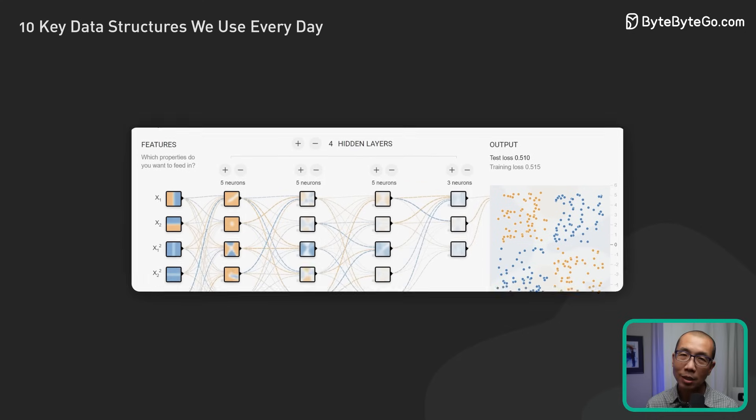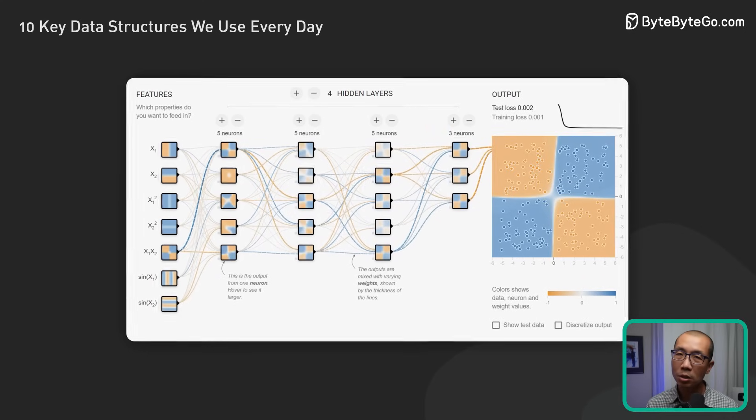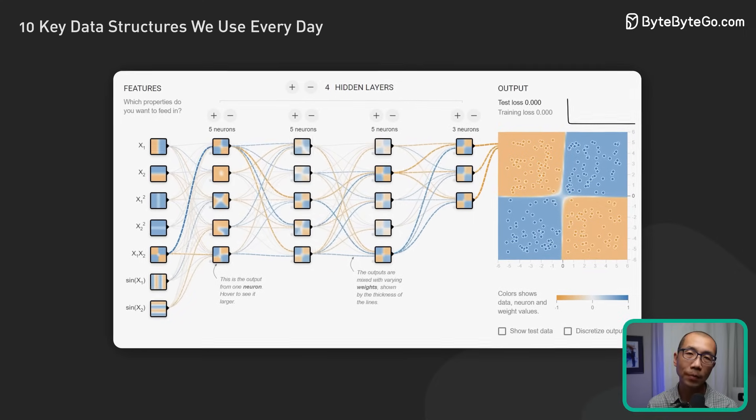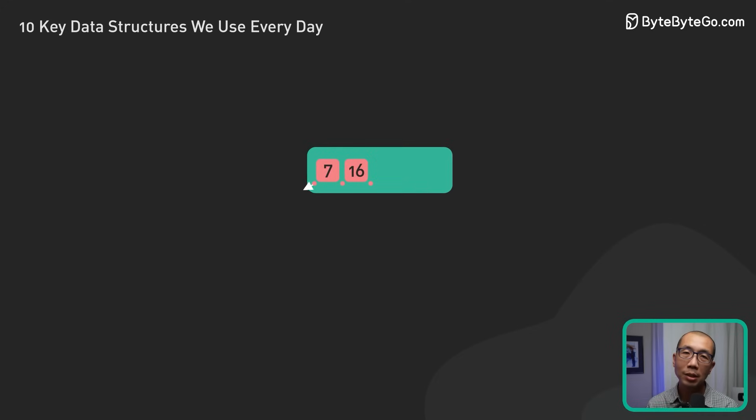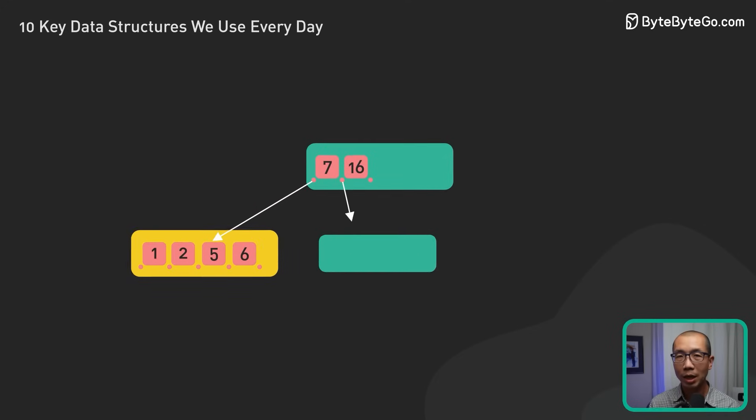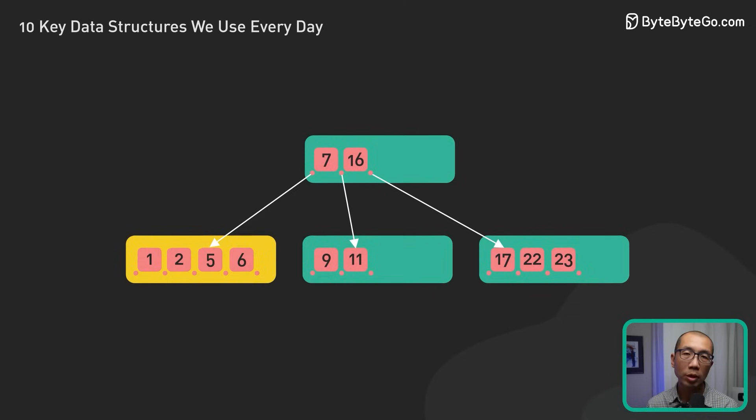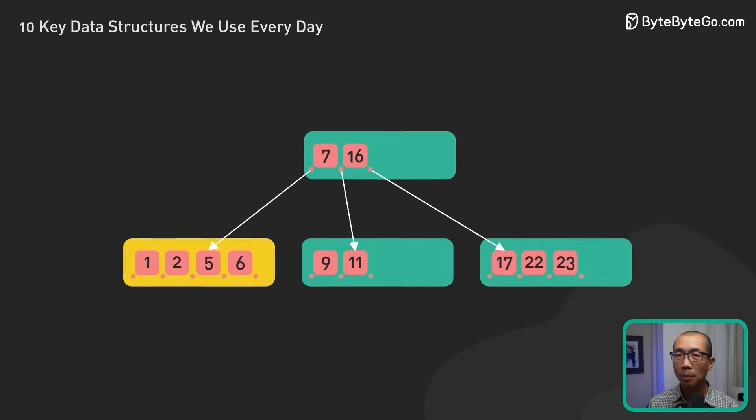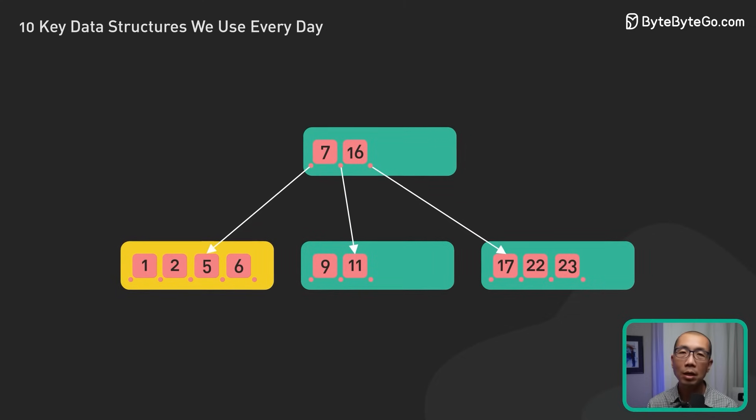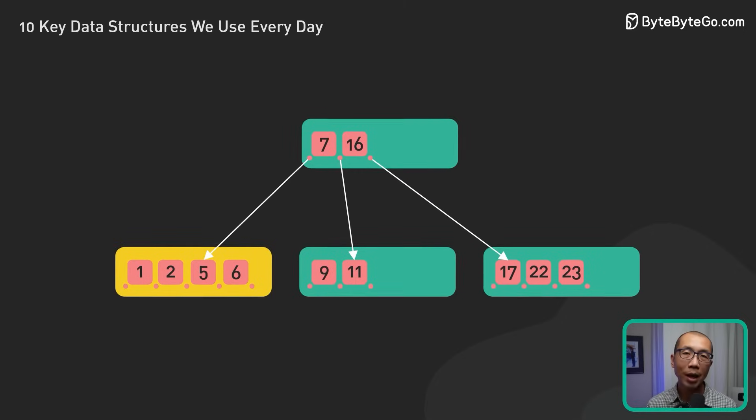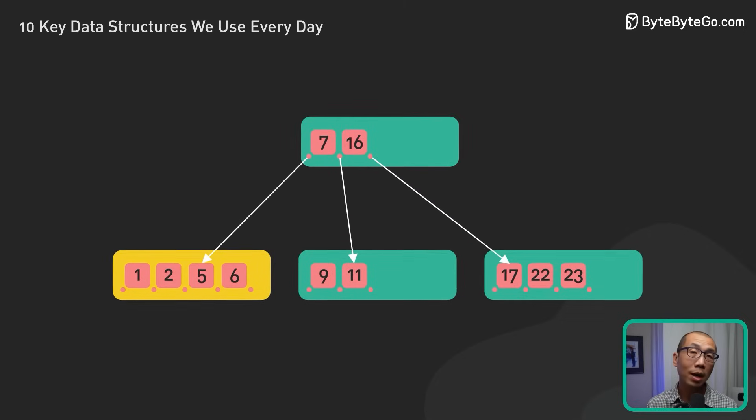In AI decision-making, trees like decision trees are used in machine learning for classification tasks. Trees are also used in database indexing, where they can help speed up search, insert, or delete operations. For example, B-trees and B-plus trees are commonly used in relational databases to efficiently manage and index large amounts of data.